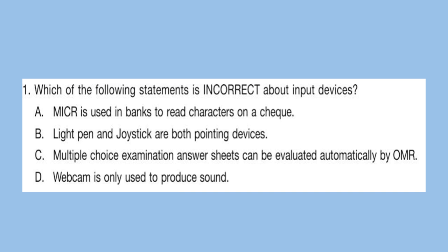Question 1: Which of the following statements is incorrect about input devices? Options are: A. MICR is used in banks to read characters on a check. B. Light pen and joystick are both pointing devices. C. Multiple choice examination answer sheets can be evaluated automatically by OMR. D. Webcam is only used to produce sound. The correct answer is option D — this statement is incorrect.